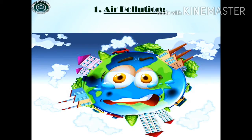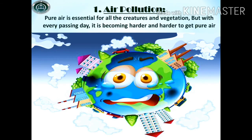Let's discuss the first type of pollution, which is air pollution. Pure air is essential for all creatures and vegetation. Every living creature on earth — like humans, animals, and vegetation — needs pure air. But with every passing day it is becoming harder and harder to get pure air, as it is very difficult to find a pure environment.